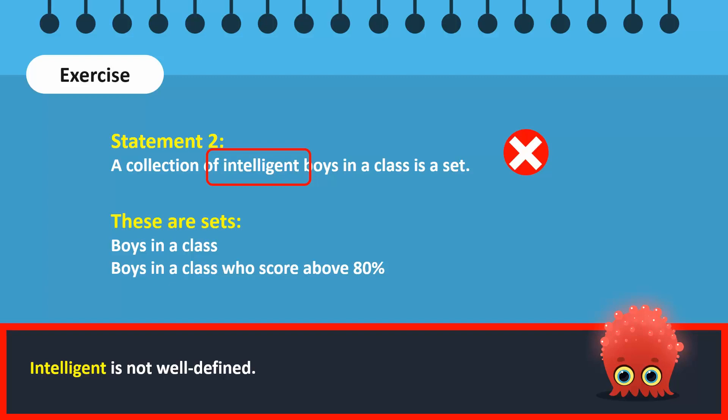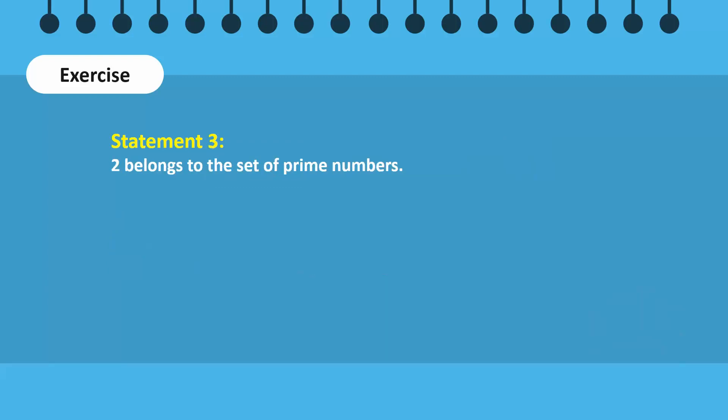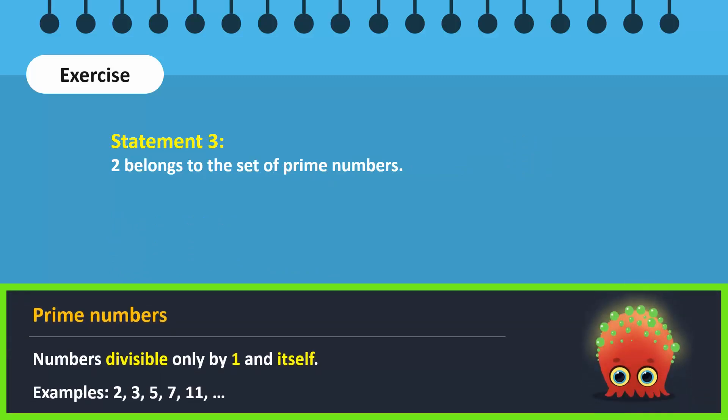For statement three, we have to know what prime numbers are. Prime numbers are numbers that can only be divided by one and itself. Therefore, the set of prime numbers include elements like 2, 3, 5, 7, 11, etc. Therefore, this statement is the only correct statement.